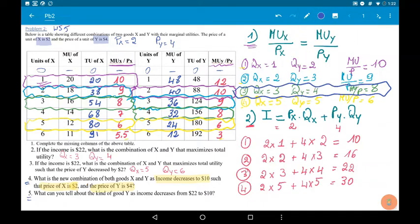two conditions must be met. The first one, MUX over PX must be equal to MUY over PY. If we have no change in PX and PY, the table will not change.